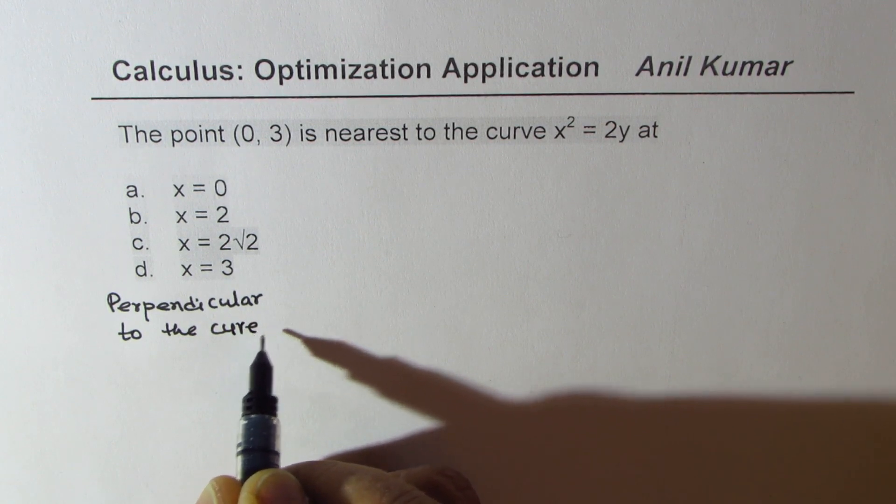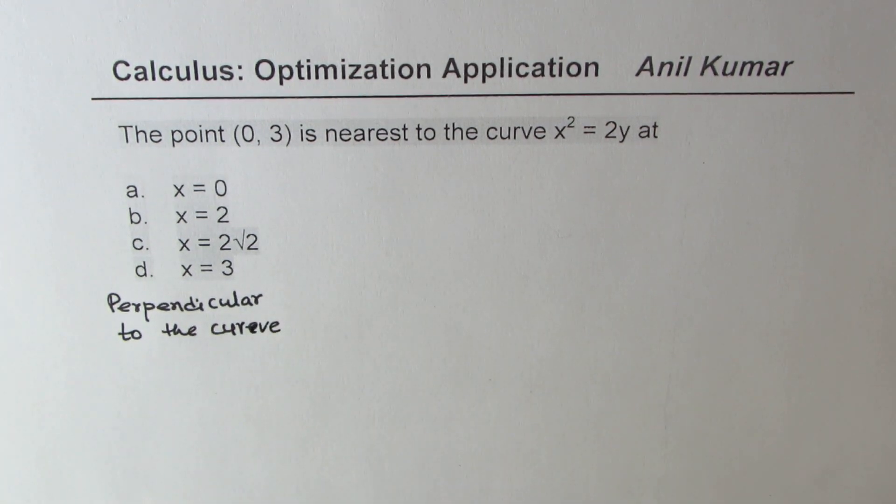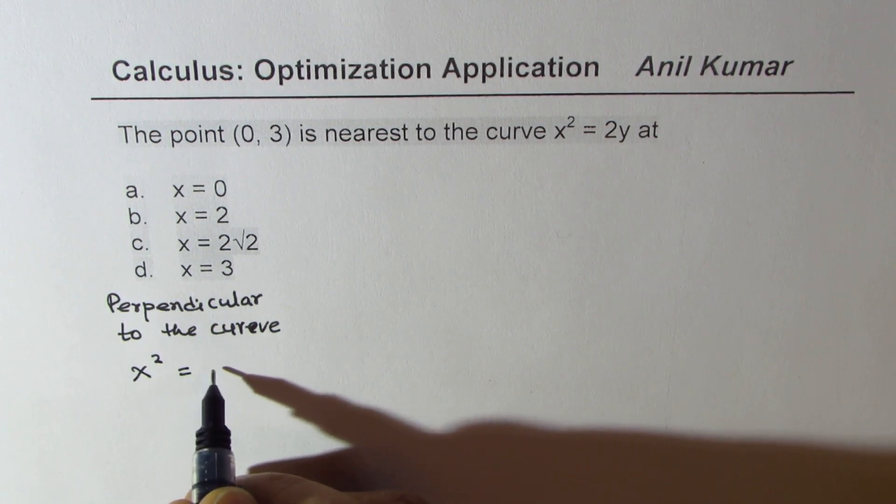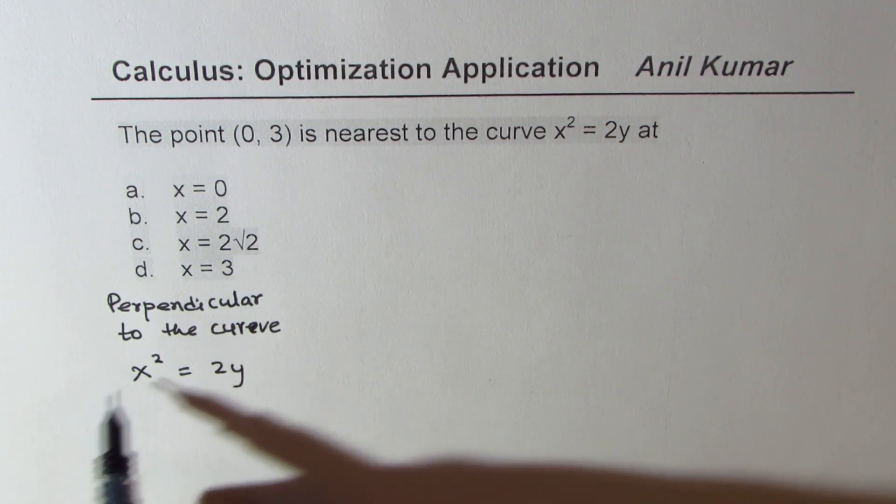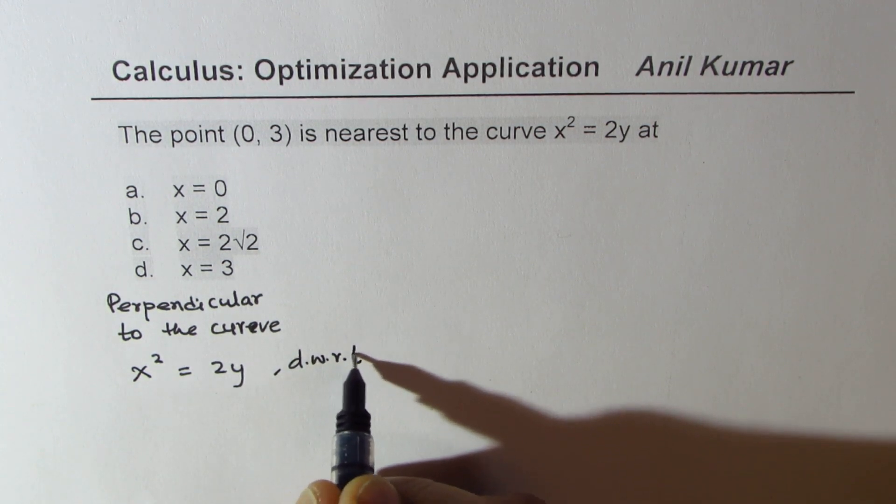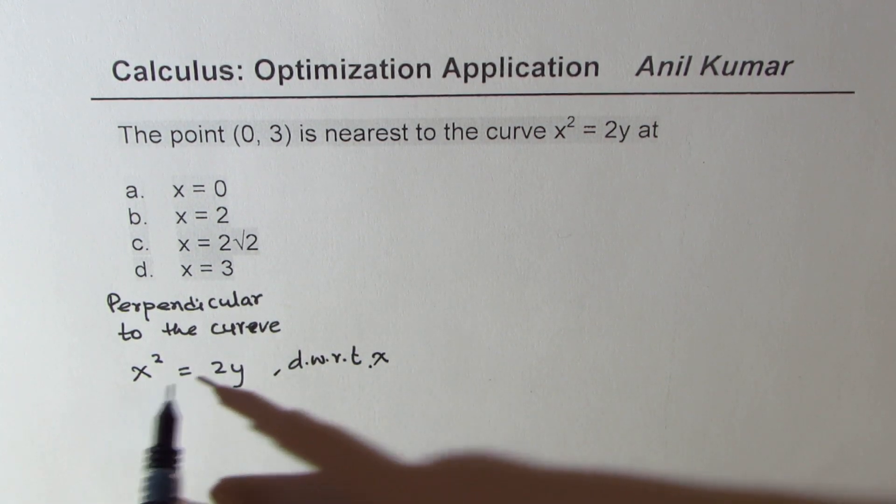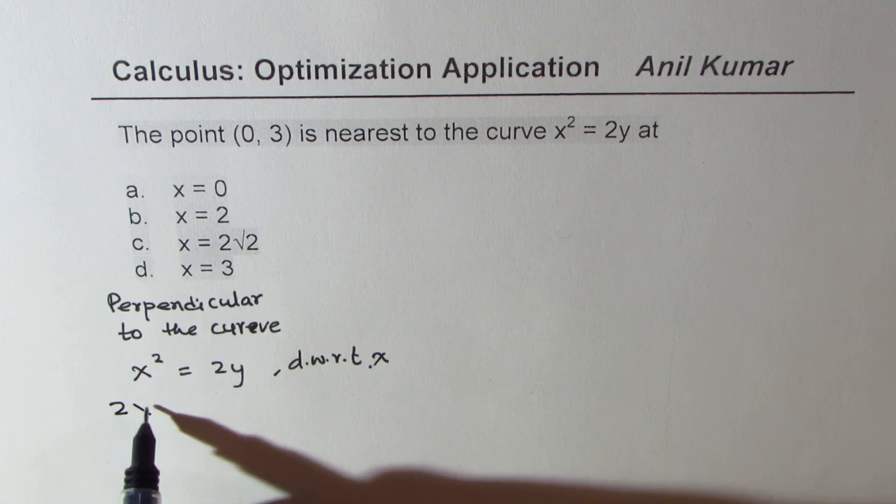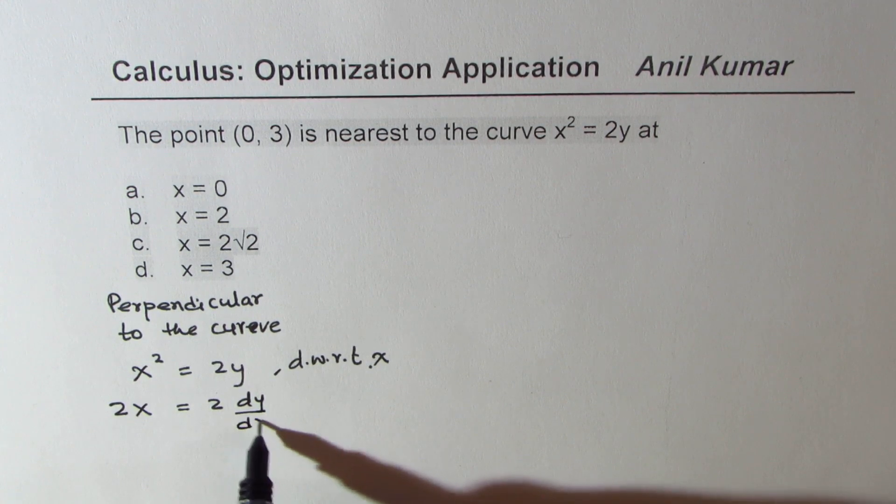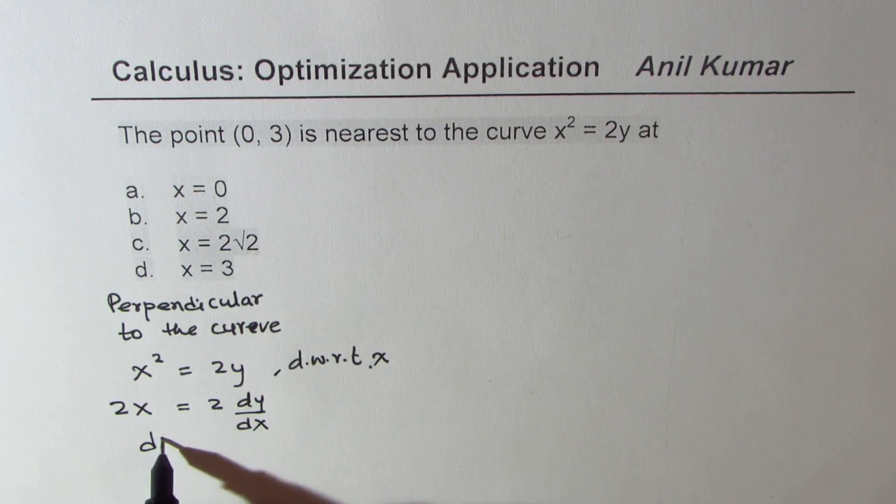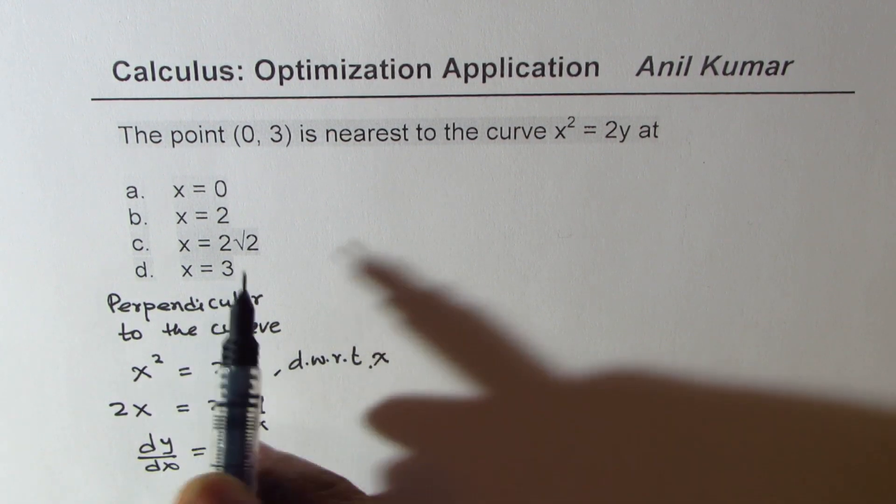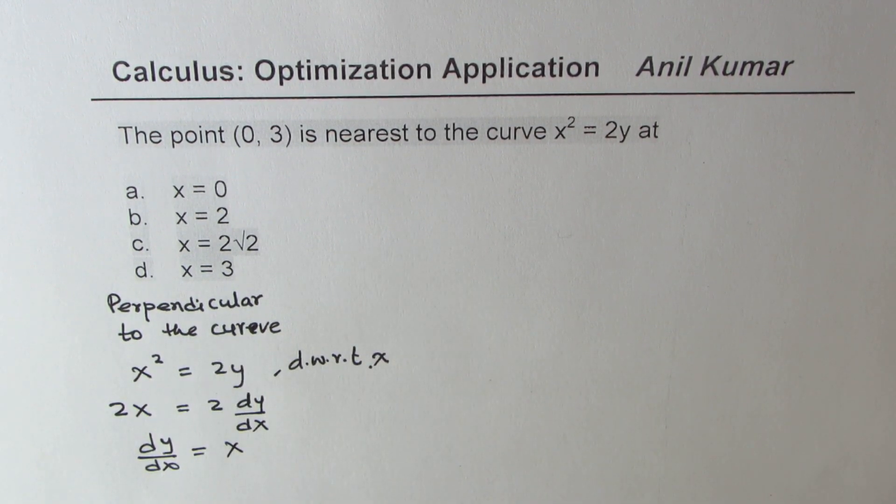So that's the whole idea. The curve given to us is x² = 2y. If I differentiate with respect to x, I get 2x = 2(dy/dx), which gives me dy/dx = x for any point on the given curve.